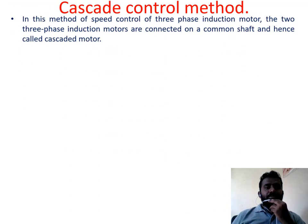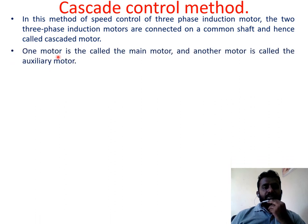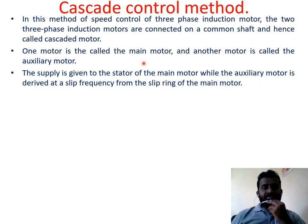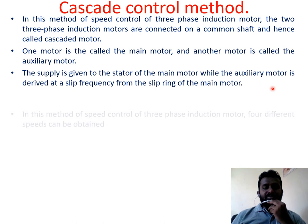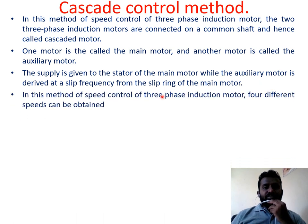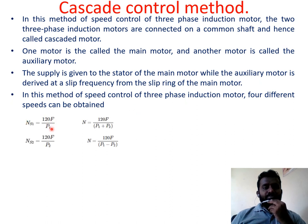Cascade control method: in this method, two induction motors are connected on a common shaft and hence called a cascade motor. One motor is called the main motor and the other is called the auxiliary motor. Supply is given to the stator of the main motor, while the auxiliary motor is driven at slip frequency from the slip ring of the main motor. Four different speeds can be obtained: 120F/P1, 120F/P2, 120F/(P1+P2), and 120F/(P1−P2).